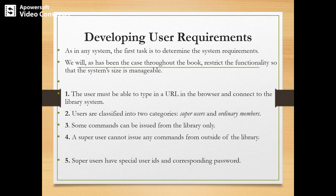The user requirements are as follows. First, the user must be able to type a URL in the browser and connect to the library system. Second, users are classified into two categories: super users and ordinary users. Super users are essentially designated library employees, and ordinary members are the general public who borrow library books.